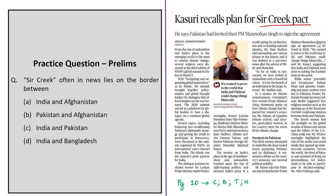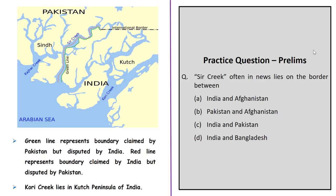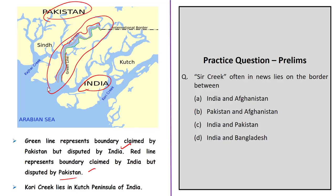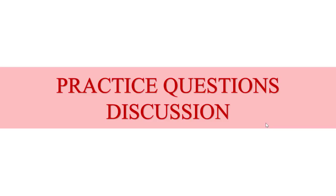Now let us look at this question about Sir Creek, a disputed area between India and Pakistan. The former Pakistan foreign minister shared his opinion about signing the Sir Creek pact in 2006, where Pakistan proposed the signing to the former Prime Minister of India. Looking at the map: the green line represents the boundary claimed by Pakistan but disputed by India, and the red line represents the boundary claimed by India but disputed by Pakistan. Also note that Cori Creek lies entirely in India in the Kutch Peninsula. The question asks which border Sir Creek lies on — the correct answer is option C: India and Pakistan.